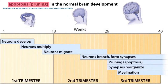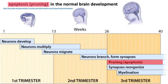There's also apoptosis in normal brain development. In the third trimester, you have pruning of brain cells — the ones that are not well-connected and not being used very much just get turned off and told they have to die. And so they die.